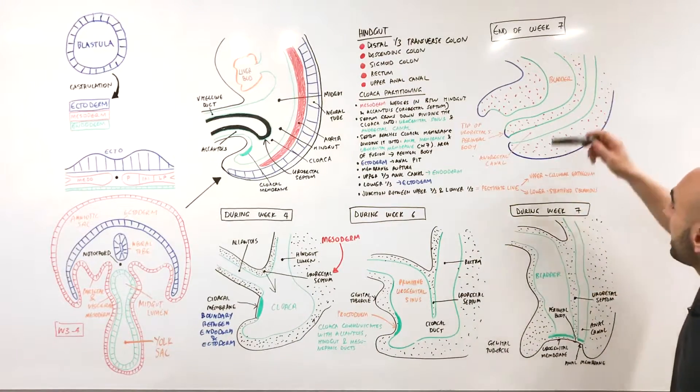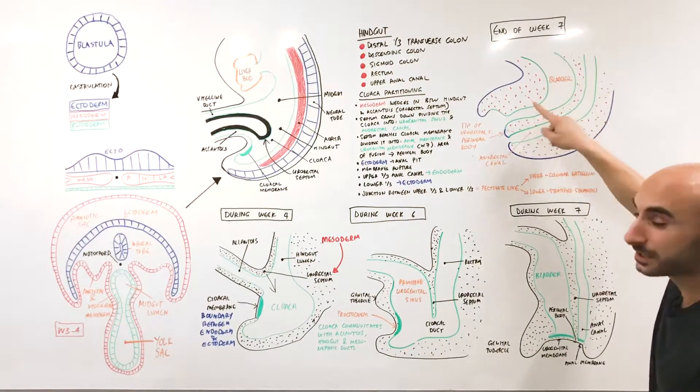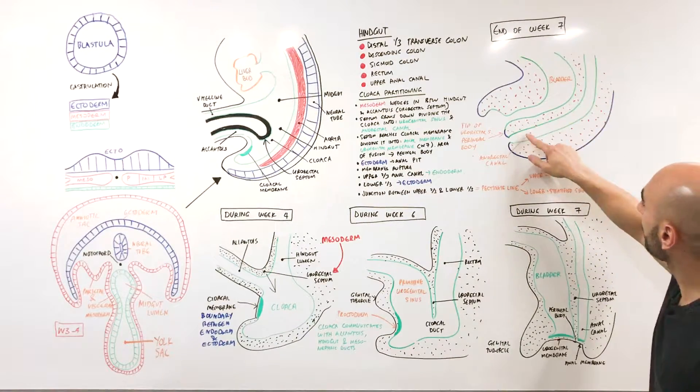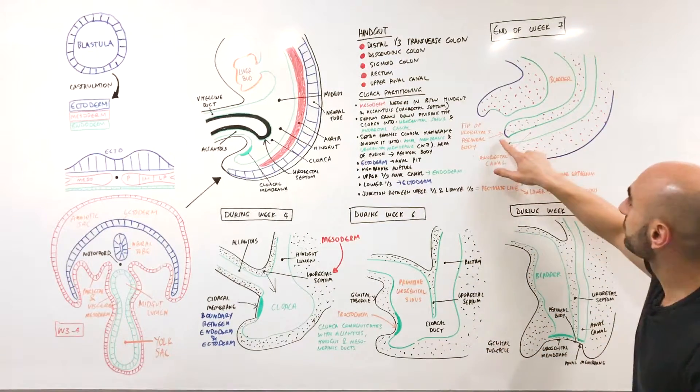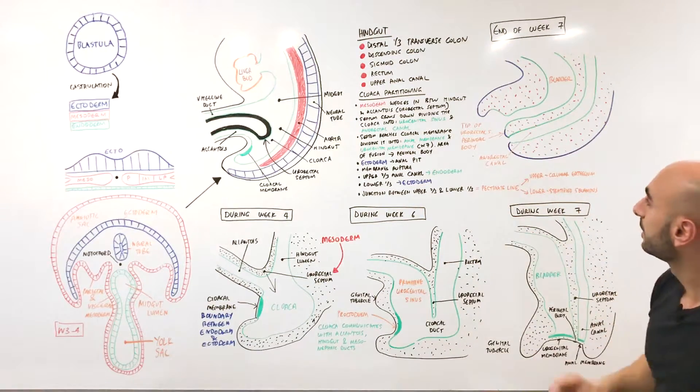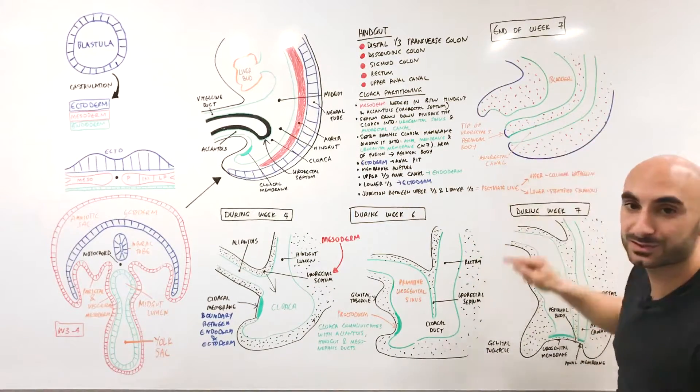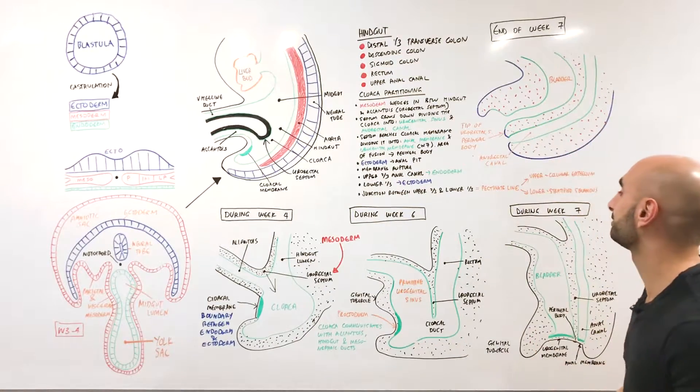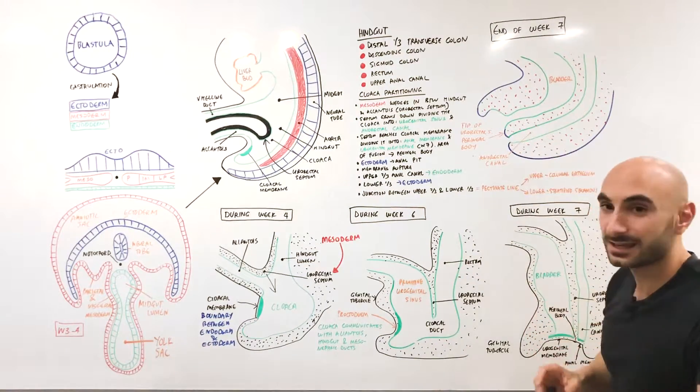By the end of week 7, we would actually have a separate bladder urinary system from the colon. The anal rectal canal is posterior to the bladder and the urogenital system. The tip of the urorectal septum will be the perineal body. The outside is ectoderm, the inside is endoderm with epithelial cells—sorry, the inside is mesoderm and the epithelial cells are endoderm. The anal pit right around here on the inside is ectoderm.